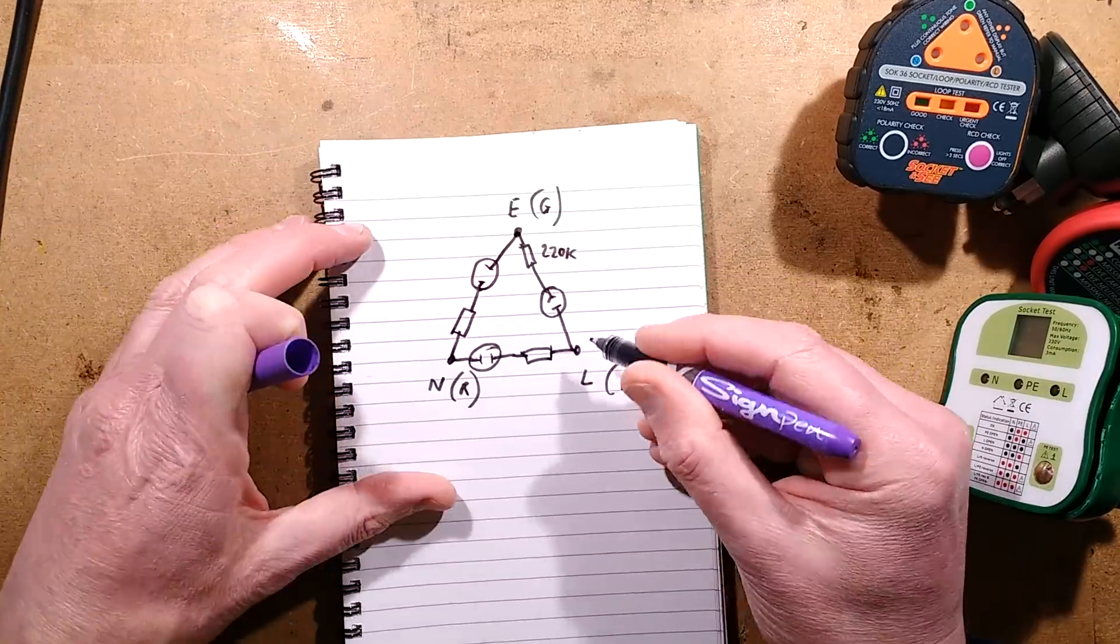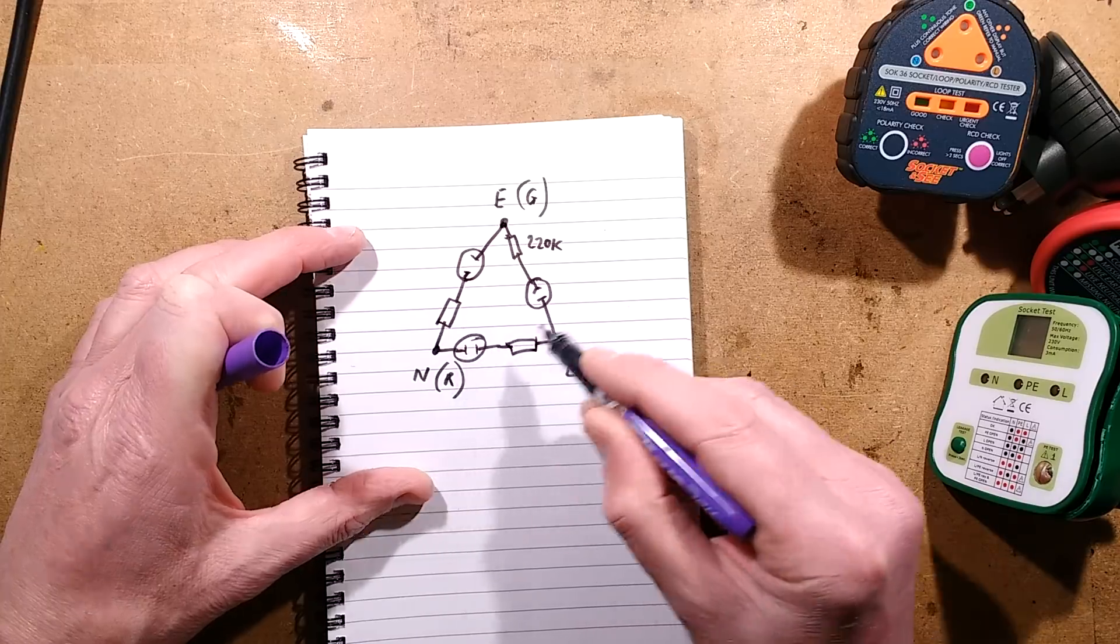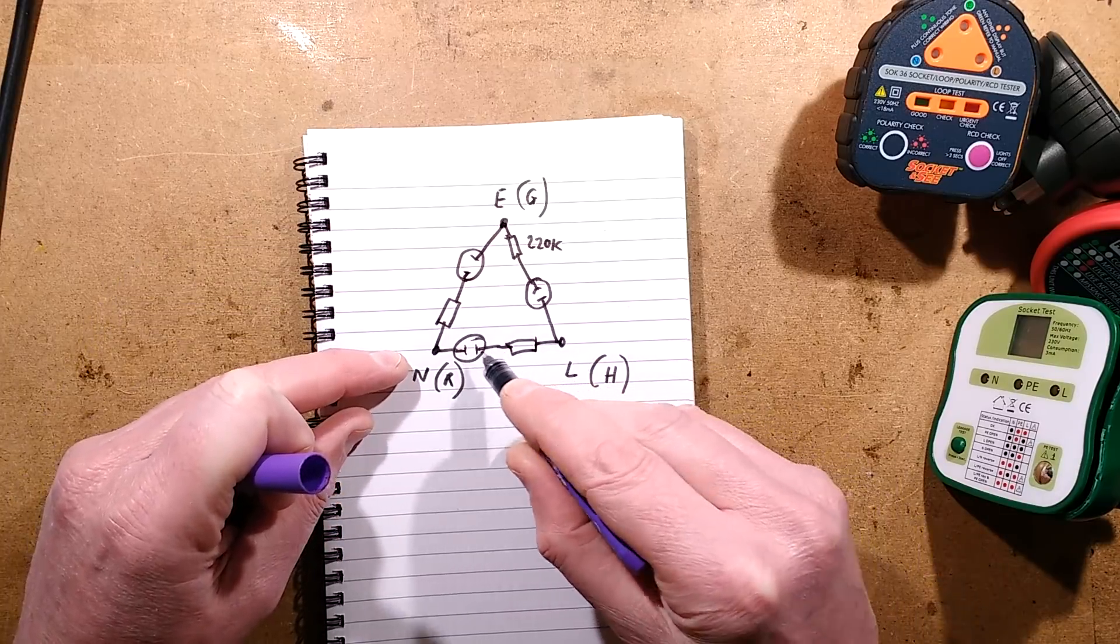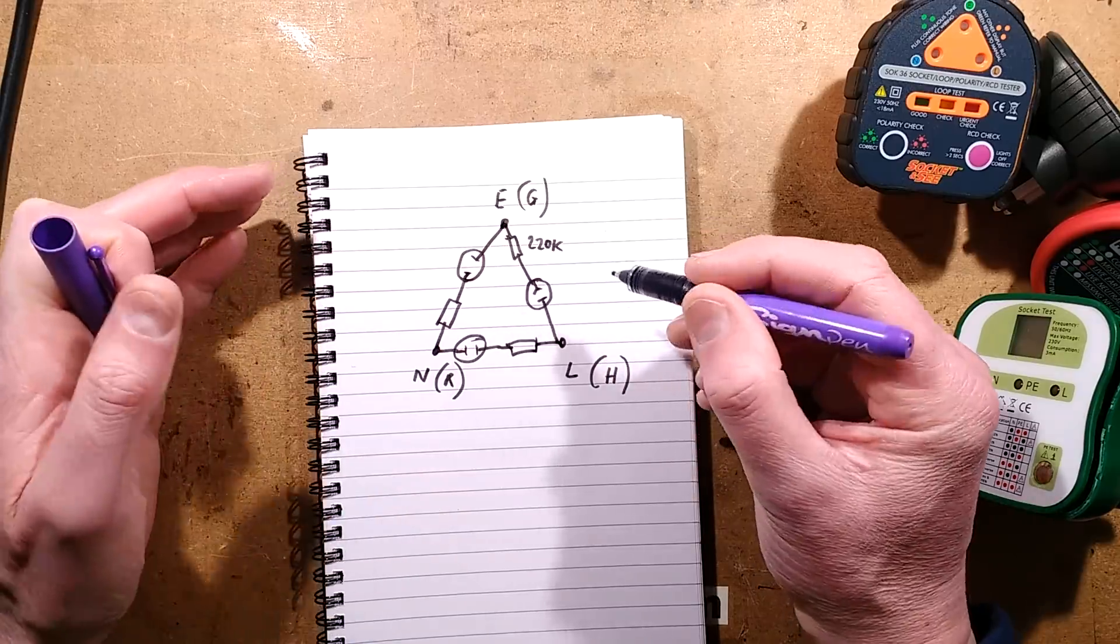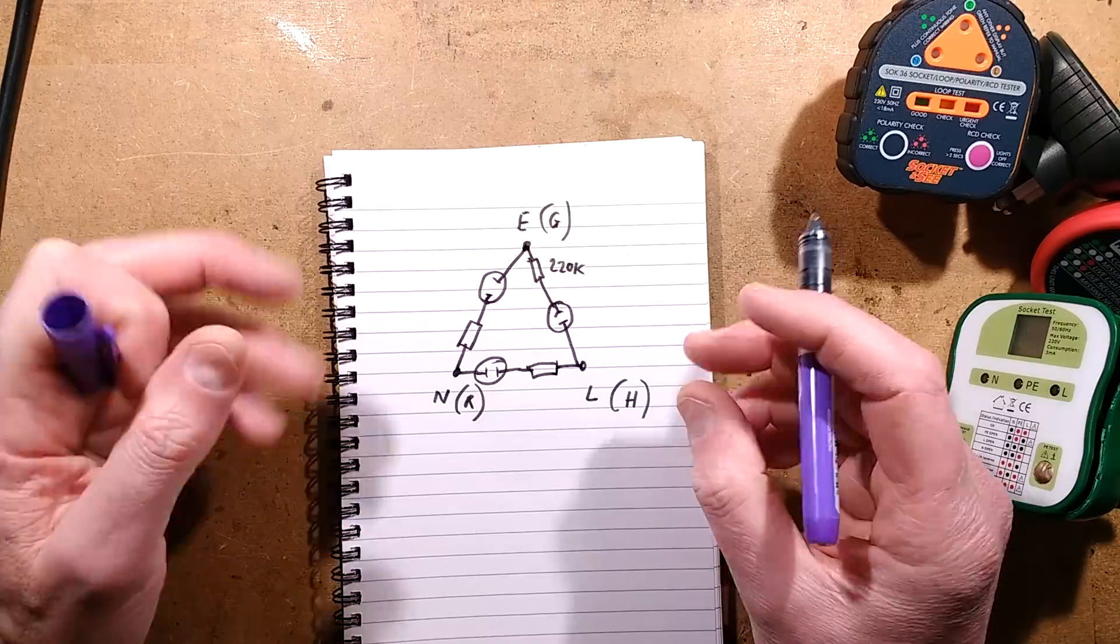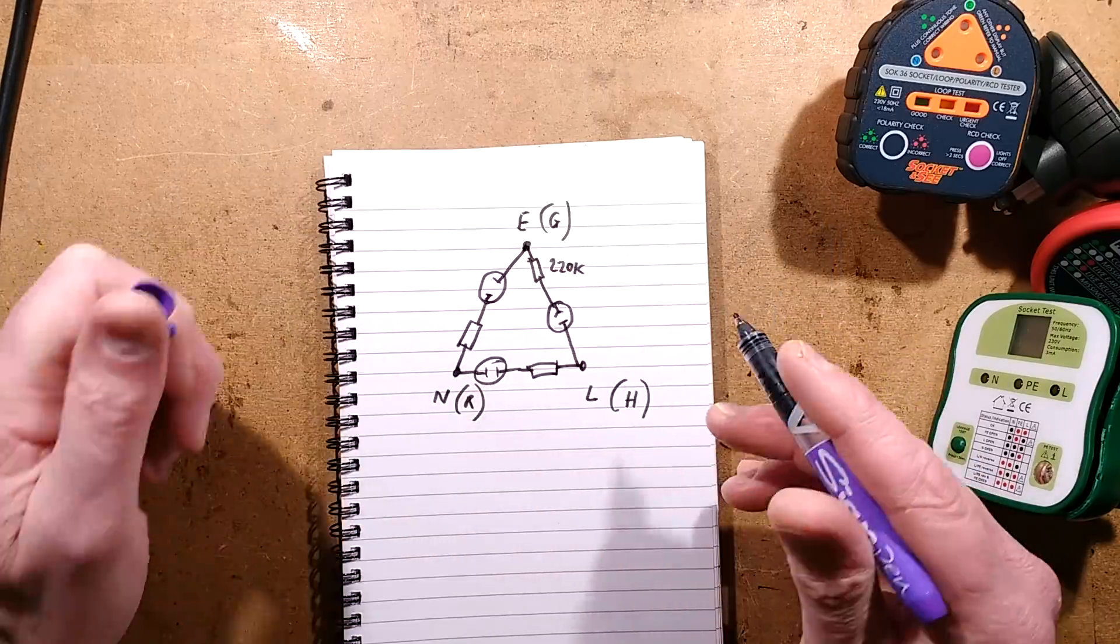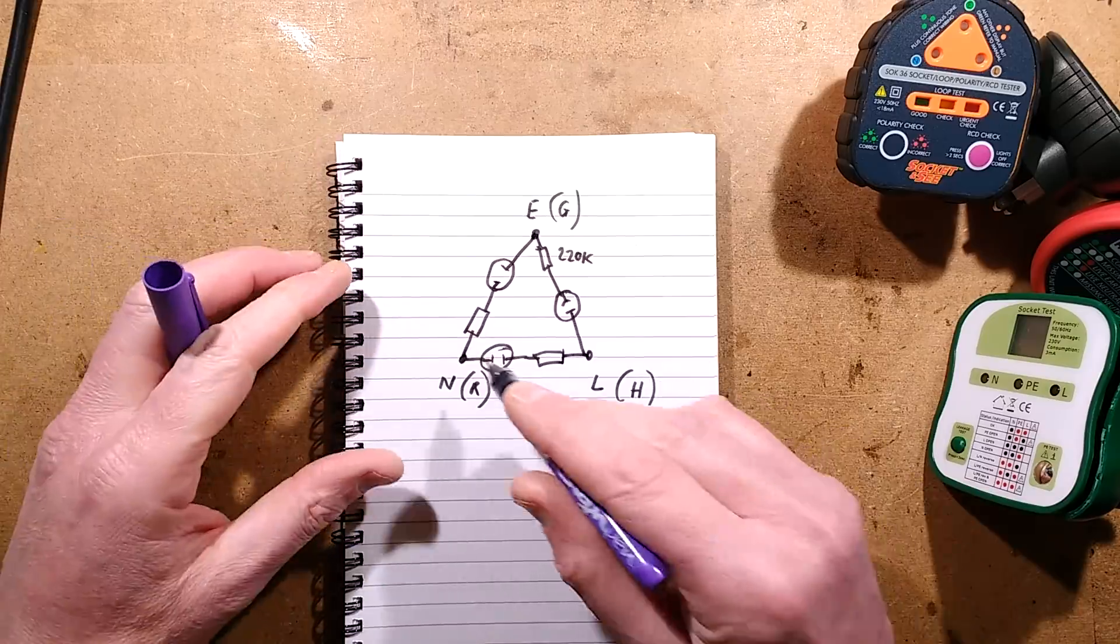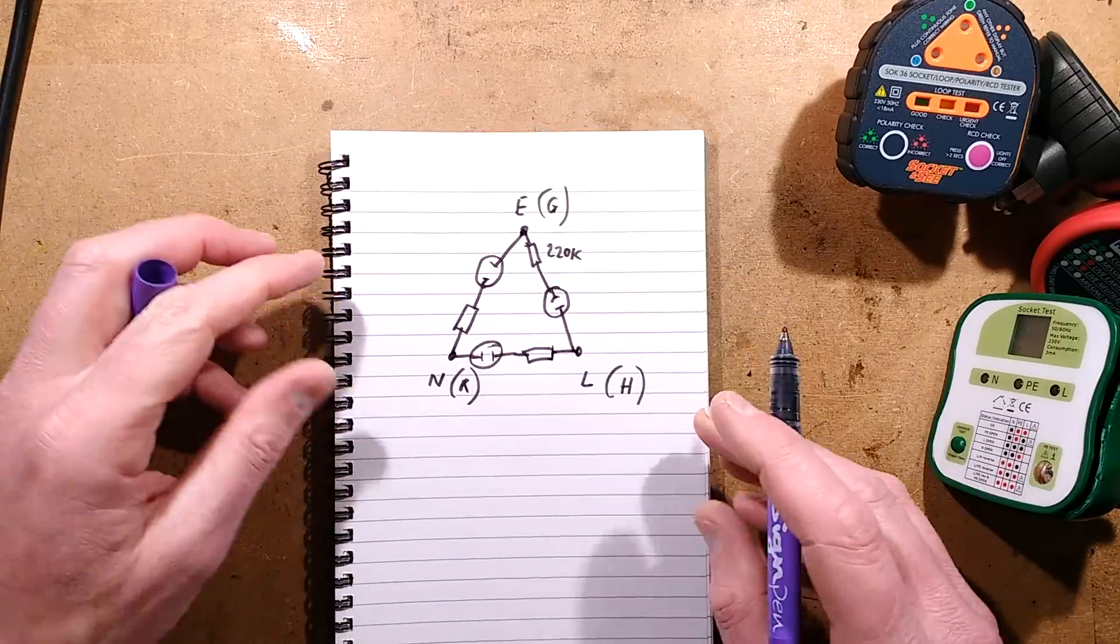When you plugged it in, the ideal scenario is that these two neons would light - one with the current flowing through the neon to the neutral and one with the current flowing through the neon to the earth. That was the correct result. I prefer the simpler ones; I'd rather it just has the two lights indicate to show you that it's good.